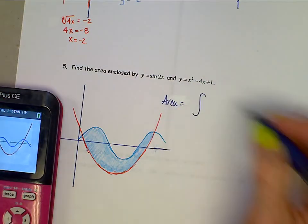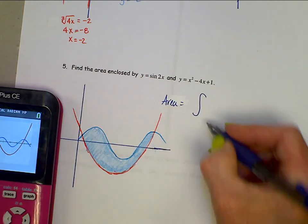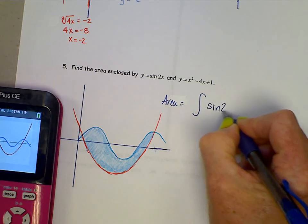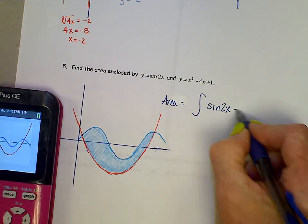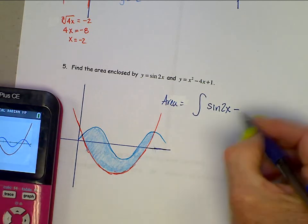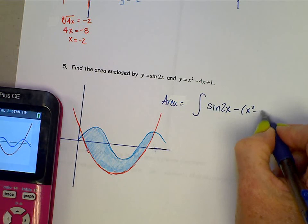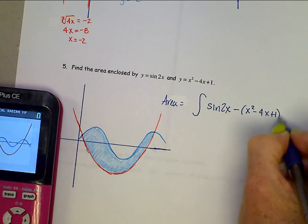Top function is this blue one, which is the sine function. So sine 2x minus bottom function, which is this parabola. Make sure you put that in parentheses. x squared minus 4x plus 1 dx.